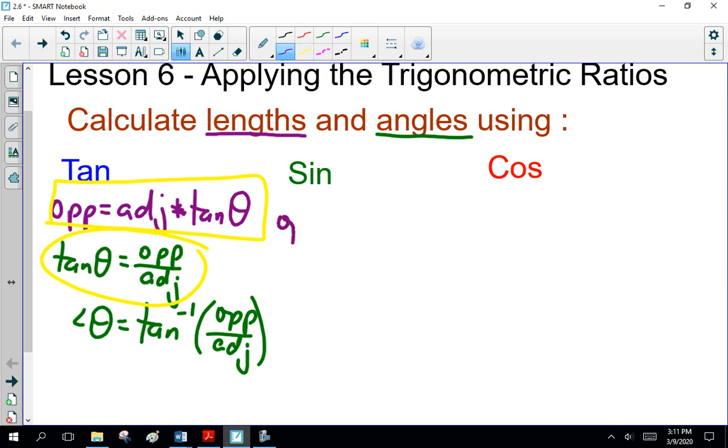Now for sine, it is opposite equals hypotenuse times sine of theta. That's to find the side length. So if you have the opposite or the hypotenuse and you have to find the other side, use that formula. Now on your formula sheet that is sine of theta is opposite over hypotenuse. And if you're finding the angle...